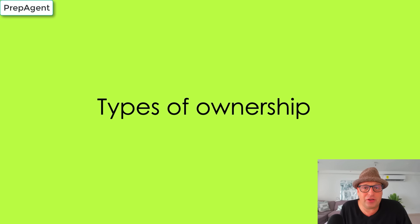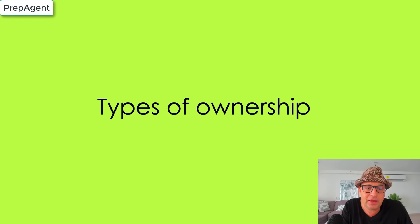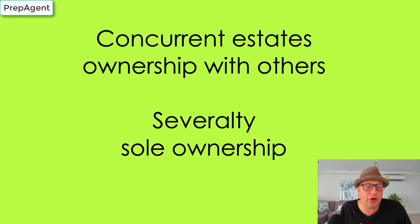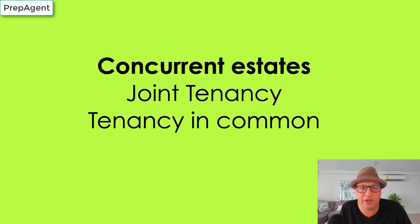Now we've covered three concepts — let's go to the fourth: types of ownership. When talking about types of ownership, there are two ways you can own property: in severalty or concurrently. Severalty means you own it by yourself; concurrent is when you own it with others. There are two types of concurrent estates you need to know: joint tenancy and tenancy in common.